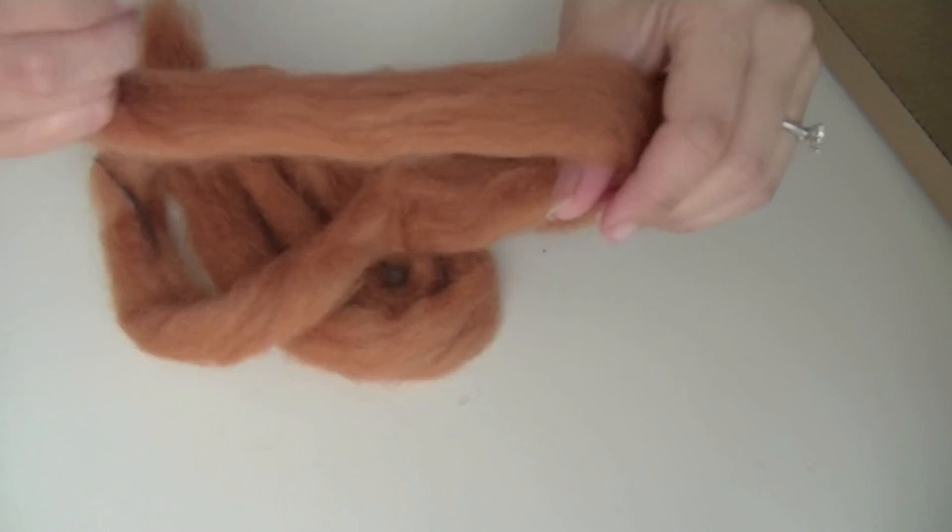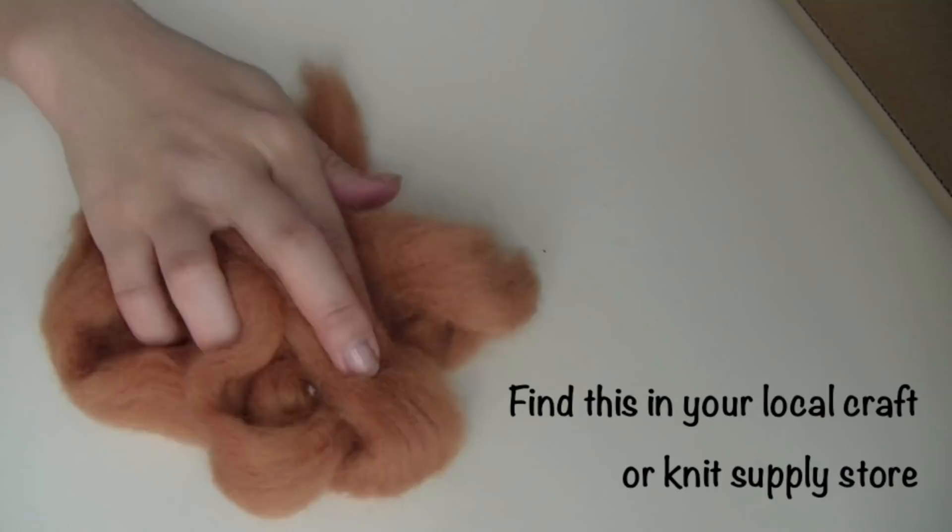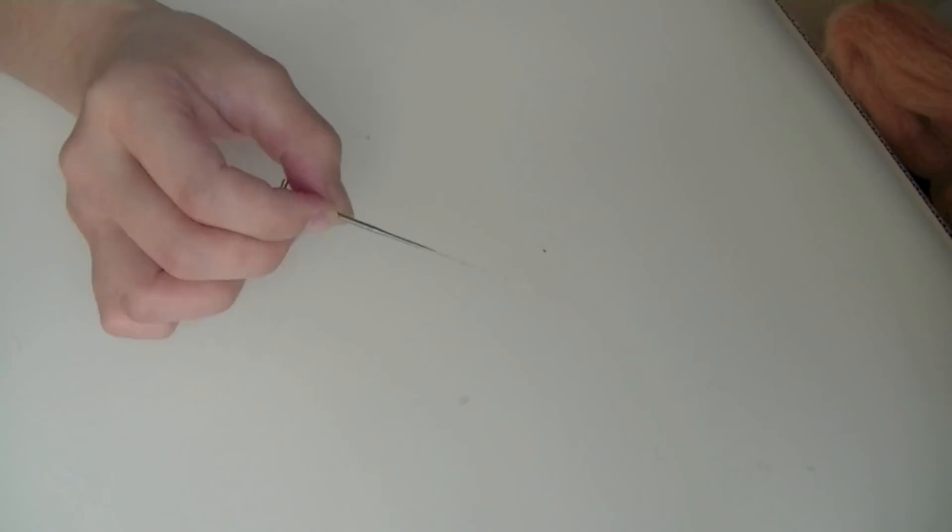Alright, so you're going to need some felting wool and you can find this in your local knitting supply store or even the craft store. Pick a color you want your poodle to be and you'll need some black for the details and also some pink for the tongue. You'll need a felting needle because you're going to be stabbing the felt, and because you're going to be stabbing, you don't want to scratch your table surface so have some type of sponge or foam pad or even polyester to work on.